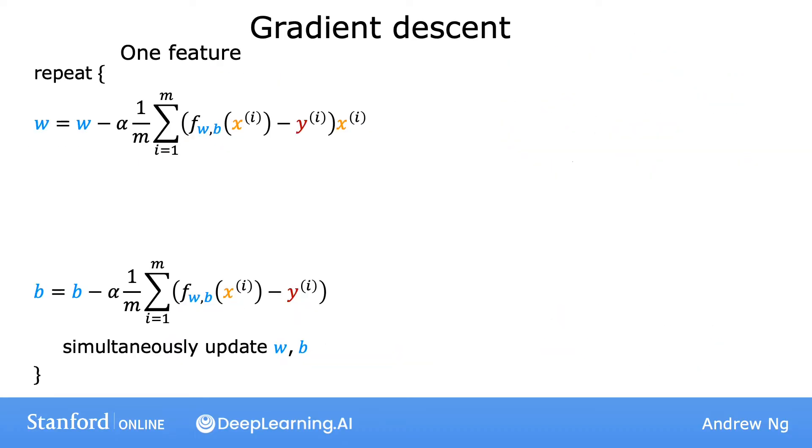We'll see that gradient descent becomes just a little bit different with multiple features compared to just one feature. Here's what we had when we had gradient descent with one feature. We had an update rule for w and a separate update rule for b. So hopefully these look familiar to you.